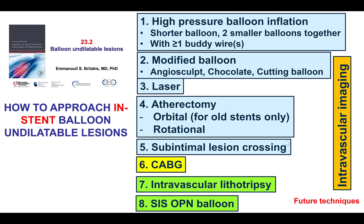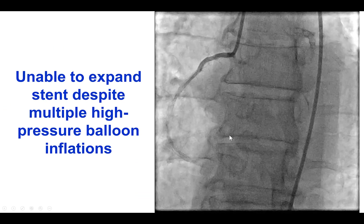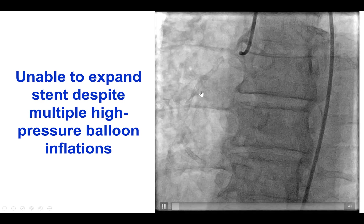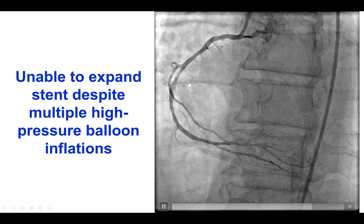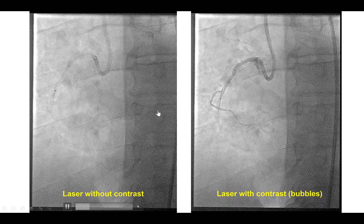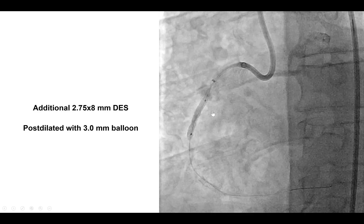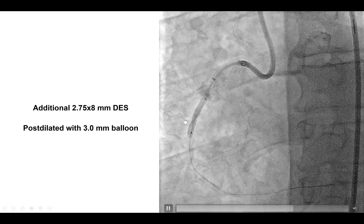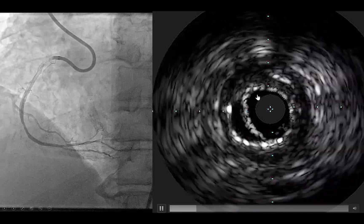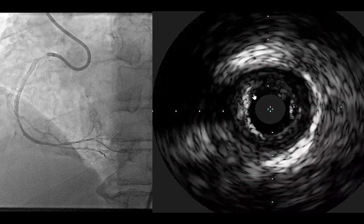Here is an example of stent under-expansion and the algorithm typically used, which starts with high-pressure balloons and plaque modification balloons, followed by laser with contrast, then atherectomy, subintimal lesion crossing, and coronary bypass graft surgery — with intravascular lithotripsy becoming an increasingly used modality for this subgroup. In the case shown, under-expansion of a stent in the right coronary artery was solved using laser together with contrast injection — we can see bubble formation — after which the stent could successfully be expanded with a nice result. Intravascular imaging is critical because sometimes stent under-expansion may not be visually apparent on angiography.